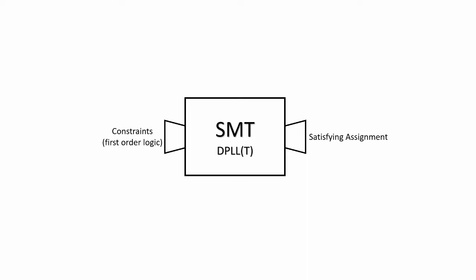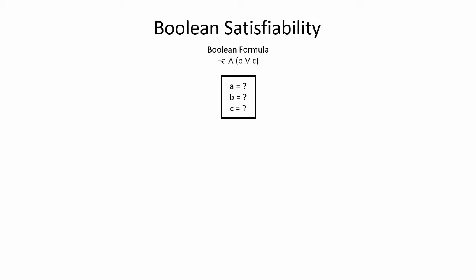What does the satisfying assignment mean? The simplest example is a boolean satisfiability algorithm, which takes in a formula in boolean logic and returns a value for each variable that will make the formula true.